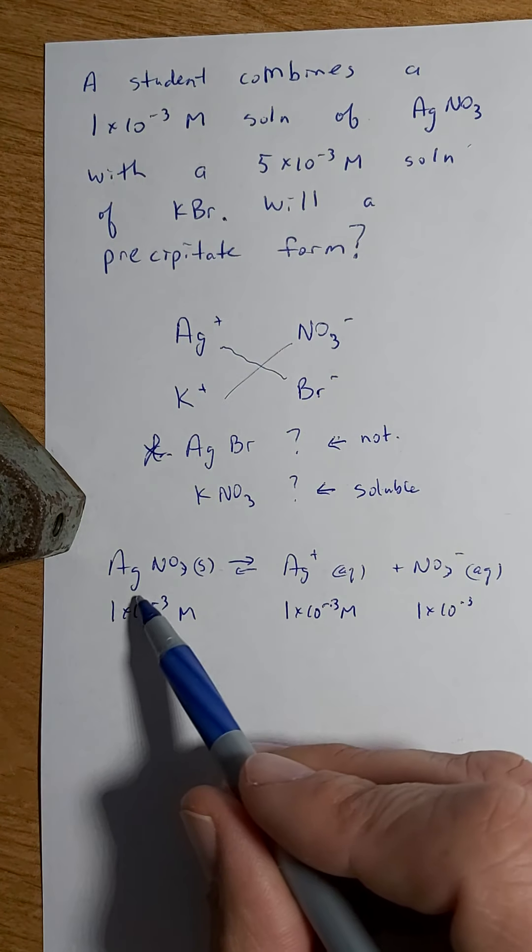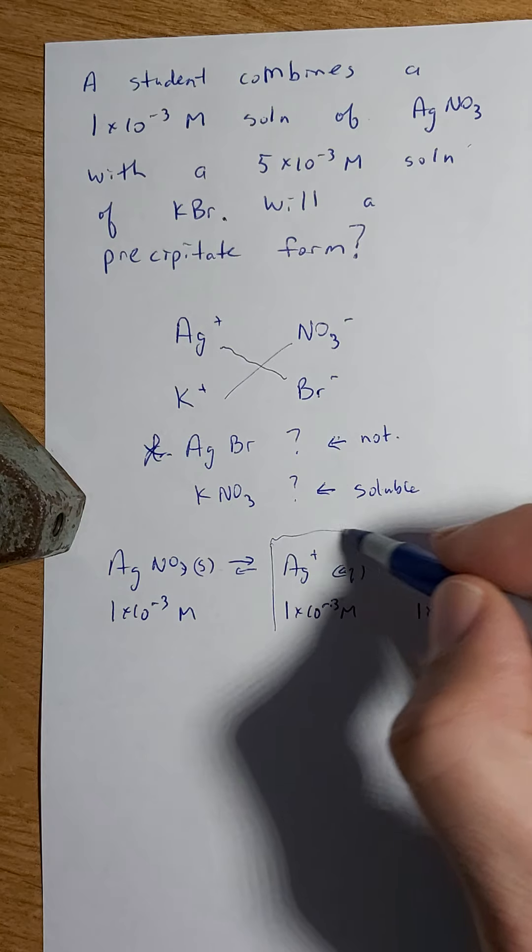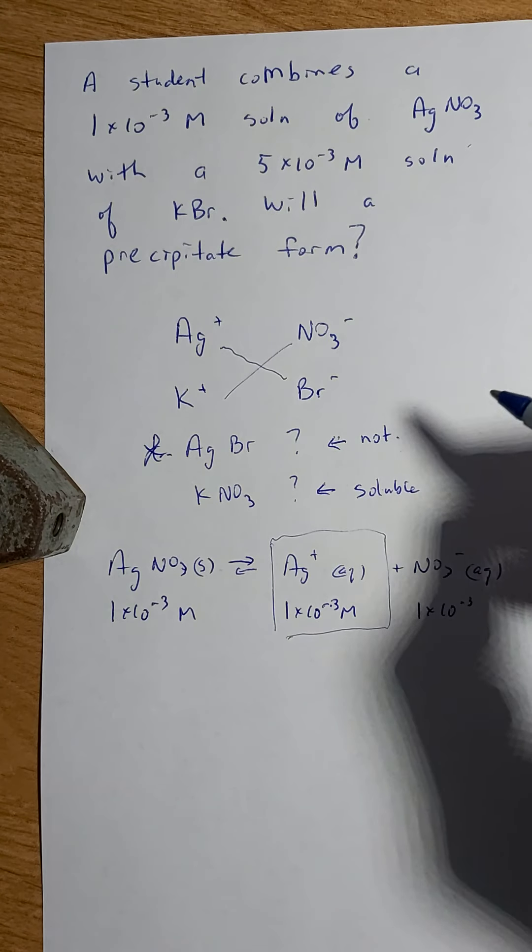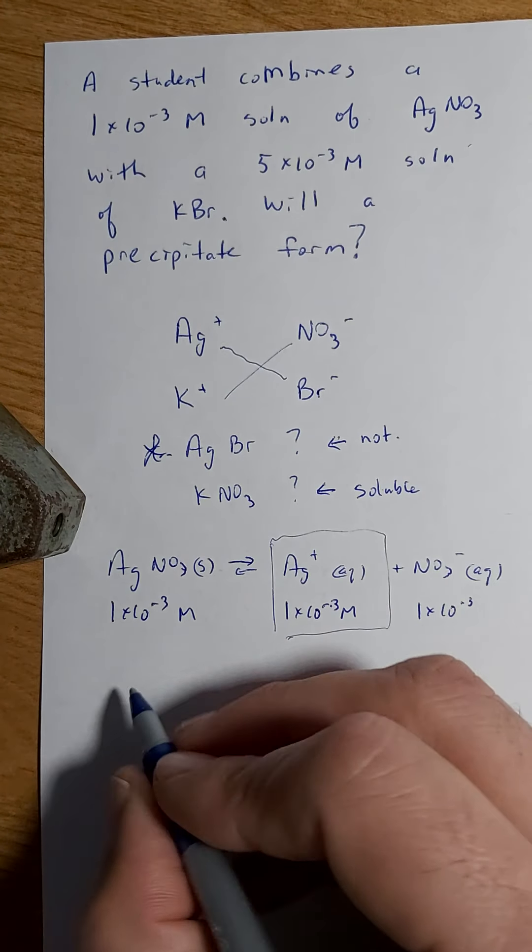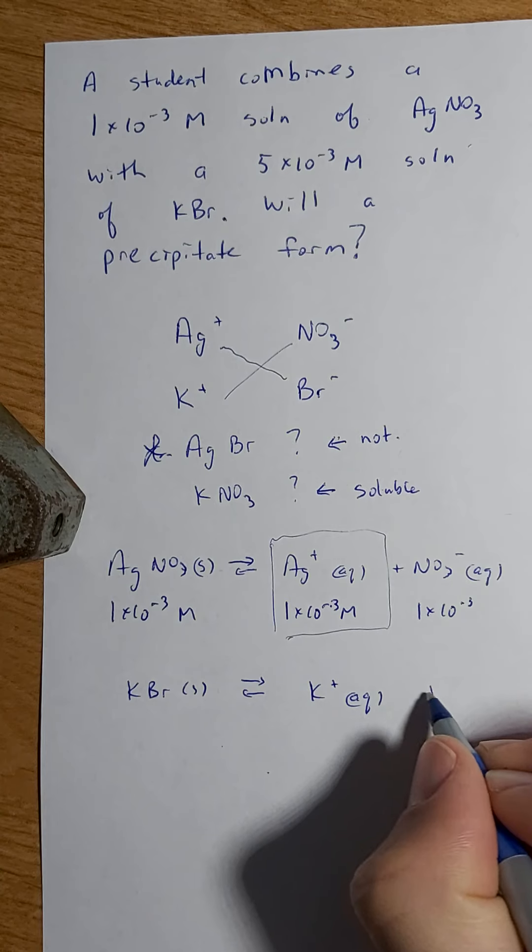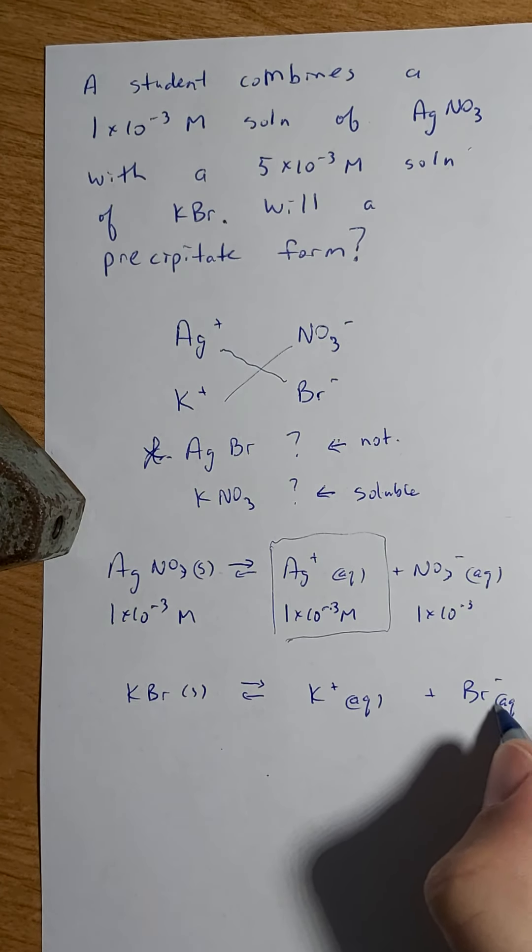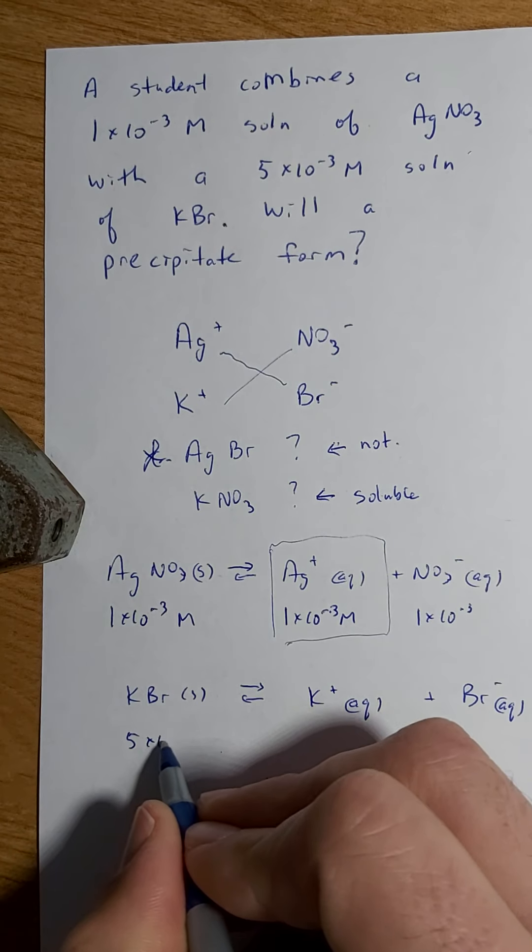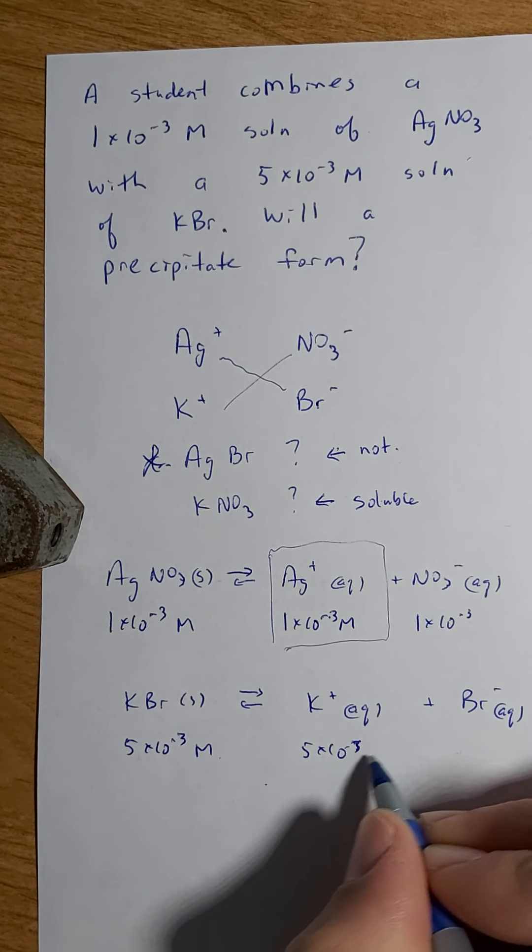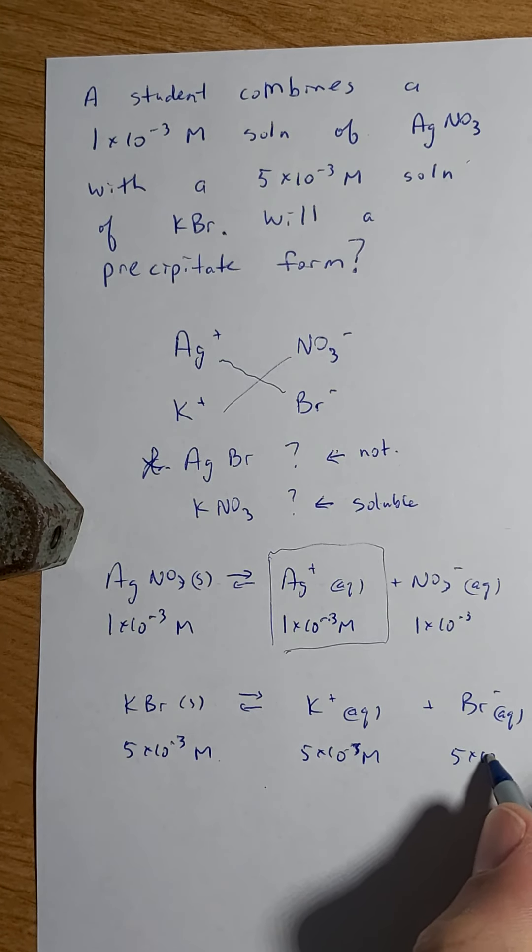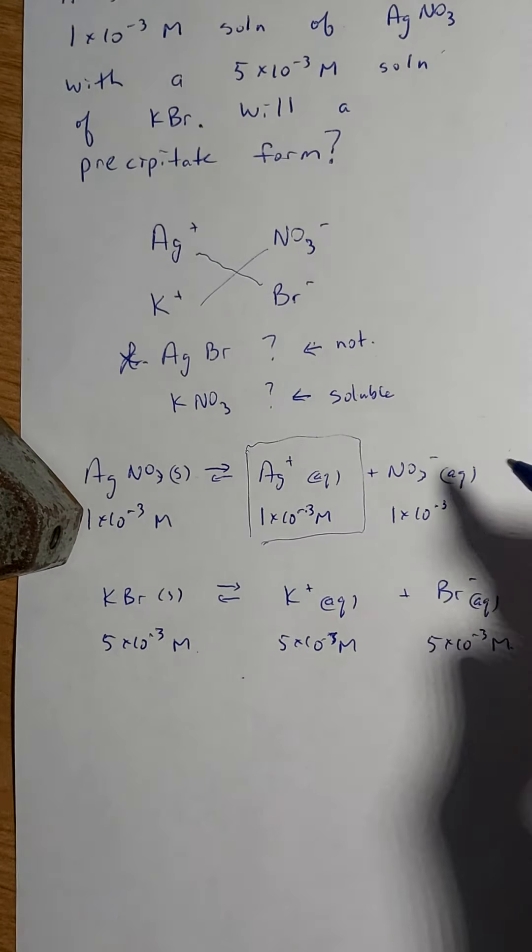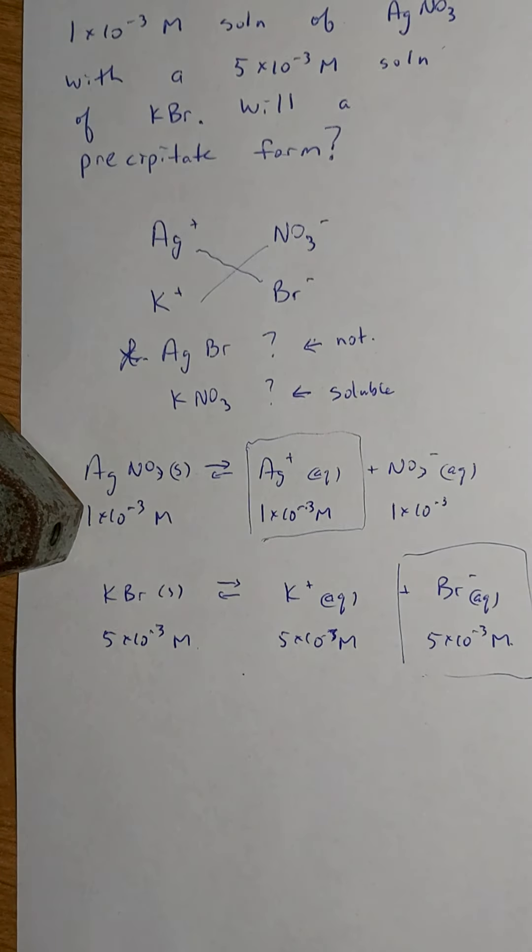What is AgNO3 giving me of interest? It's giving me the Ag, because that's going to be used in my possible precipitate here. The other thing I have is KBr. So KBr solid is breaking up into K+ and Br-. And this concentration is 5x10^-3 molar. So this is going to be 5x10^-3 molar and this is going to be 5x10^-3 molar. And this is the one that I'm most interested in.